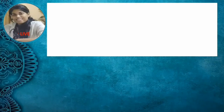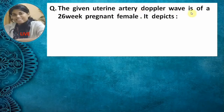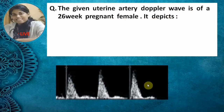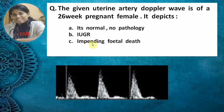Hello everyone, it's time for questions. The first question shows a uterine artery Doppler waveform of a 26-week pregnant female. The options are: A) it's normal with no pathology, B) IUGR, C) impending fetal death, and D) preeclampsia.